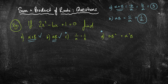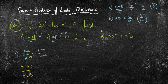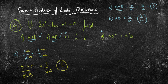Once we've got those two answers, we can now create parts c and d. For 1 over alpha plus 1 over beta, we make the denominators the same by cross-multiplying, giving us beta plus alpha over alpha beta, which is alpha plus beta over alpha beta. That's 3 divided by a half, which equals 6.